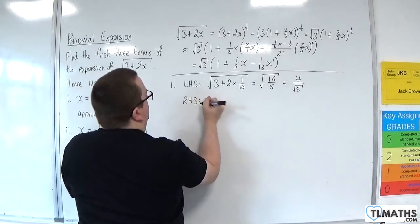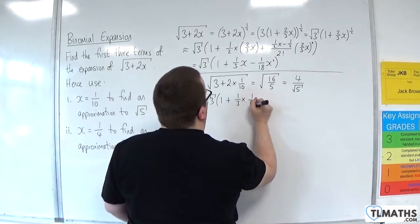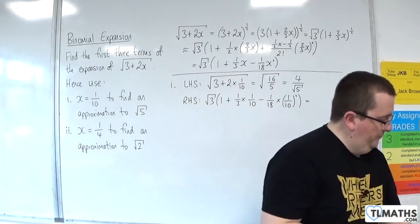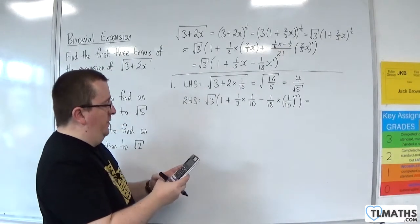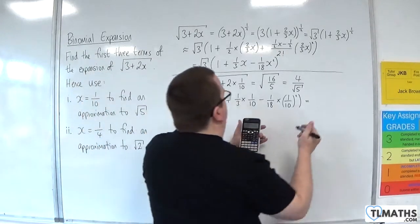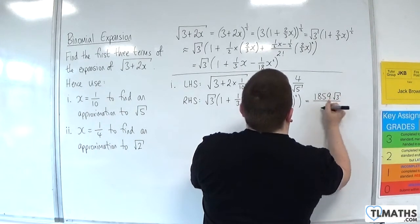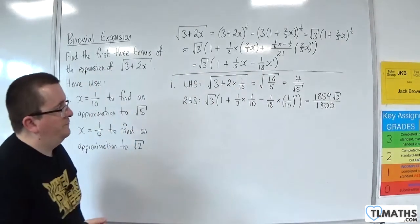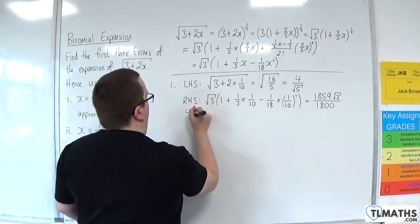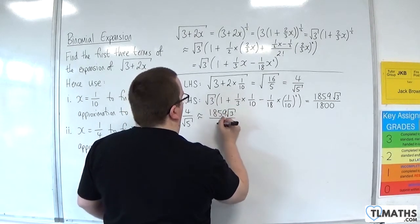For the right-hand side, we've got root 3 times by substituting in 1 tenth. So 1 third times 1 tenth, take away 1 over 18 times 1 over 10 squared. So 1 plus 1 over 30, take away 1 over 18 times 1 over 100. And we get root 3 times 1859 over 1800. So what I'm saying is that 4 over root 5 is approximately equal to 1859 root 3 over 1800.